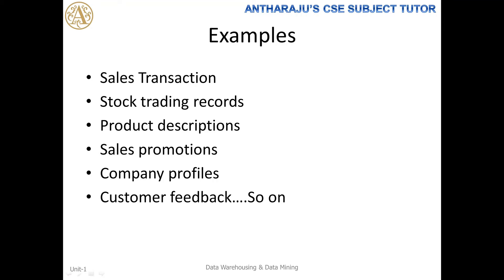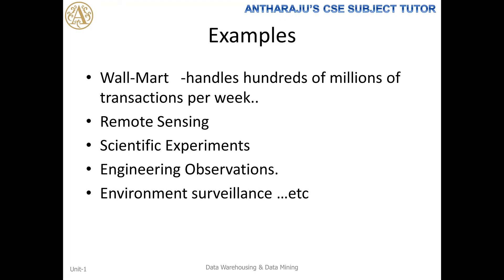Examples of data generated include: sales transactions, stock trading records, product descriptions, sales promotions, company profiles, customer feedback, and so on. Every click you do on the screen and on the internet generates data. For example, Walmart is one such example. In Walmart, it's a big company and people do transactions — they buy products. Whenever they make transactions, that gives the basic requirement for data warehouse and data mining. Remote sensing, scientific experiments, and engineering observations are also examples where data is generated.